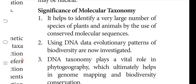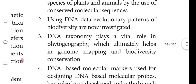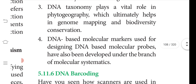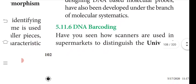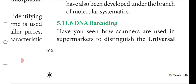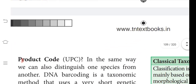The significance of molecular taxonomy is that it helps identify large numbers of species, and using this data we can arrive at evolutionary patterns of biodiversity. It plays a vital role in phytogeography — how plants are geographically arranged — and also in genome mapping and biodiversity conservation. DNA-based molecular markers are used for designing DNA-based molecular probes.